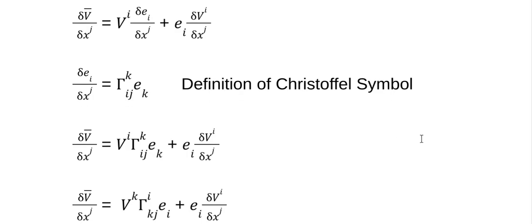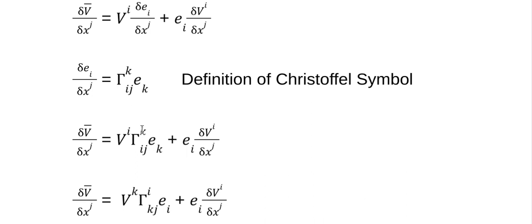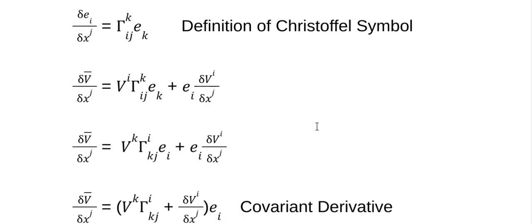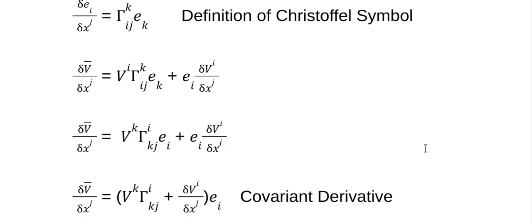What we can do here is swap these dummy indices — these are the summation indices, and it's perfectly legal to swap them. I have an I in the upper, I in the lower, a K in the upper, and K in the lower. So on this first expression I'm just going to swap them all. Now what that does is give us the same basis vectors on both sides of the equation, so I can pull that out and leave this in the middle under the parentheses. And this is called the covariant derivative, which you will see a lot in tensor calculus and in relativity.